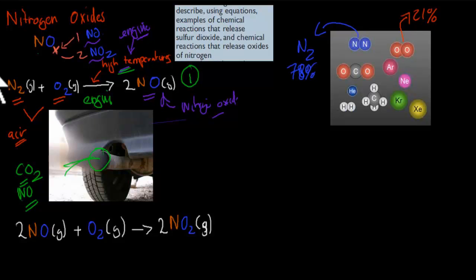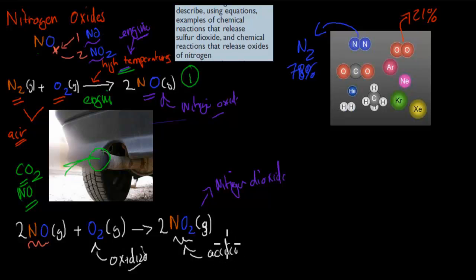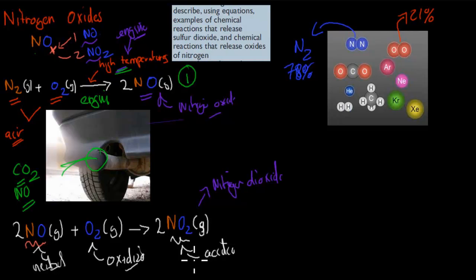Now, how do we produce nitrogen dioxide? Nitrogen dioxide is produced this way. This is the oxidation of nitrogen monoxide. We've got nitrogen monoxide in our reactants, and we oxidize it by adding oxygen. Then it becomes two moles of nitrogen dioxide. This is the acidic version, and nitrogen monoxide is the neutral version. Nitrogen monoxide is still dangerous but not acidic, whereas nitrogen dioxide is acidic and will produce acid rain. This is the second chemical equation you should remember.